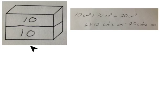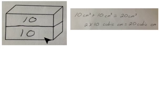Here's another way to show the layers in that rectangular prism. The prism was two units high, so we could cut it in half horizontally from left to right, and there would be 10 cubes in each half — a top layer of 10 cubes and a bottom layer of 10 cubes. So we'd have 10 cubic centimeters plus 10 cubic centimeters, which equals 20 cubic centimeters, or 2 times 10 cubic centimeters equals 20 cubic centimeters.